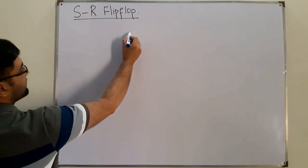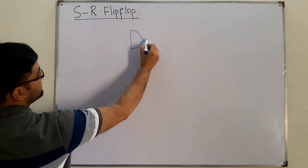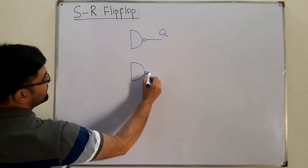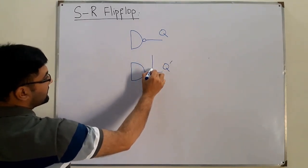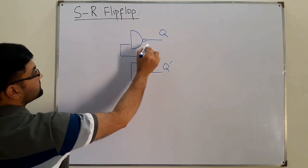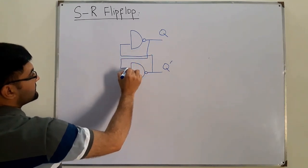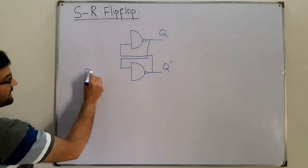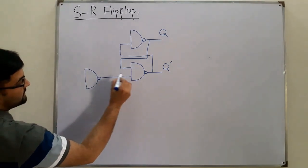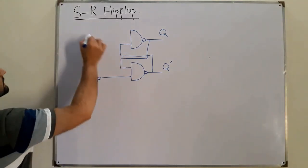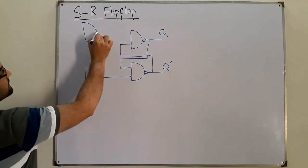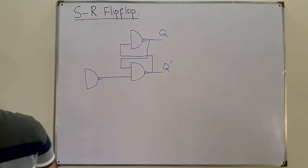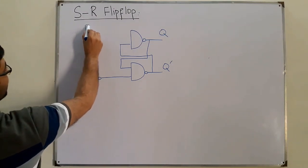So we draw it over here. This was one NAND gate — the output is Q. The other NAND gate has output Q complement. This Q complement is given as feedback to the first gate, and Q is given as feedback to the second gate. Over here we also have another NAND gate which acts as input to the second gate, and similarly another NAND gate on the other side.